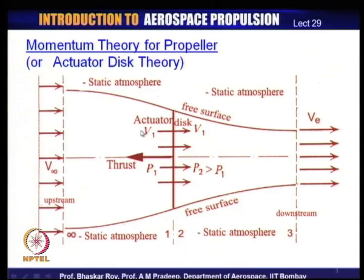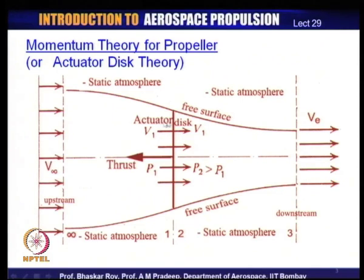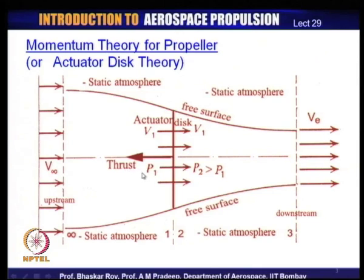As the flow moves into the actuator disc, it acquires a velocity V₁ — the velocity at the actuator disc — changed from V∞ which is the far upstream velocity. The actual velocity through the actuator disc is V₁. Across the actuator disc there is a change of pressure: it changes from P₁ to P₂ in a jump change. P₂ must be greater than P₁, and this differential pressure on the two sides of the actuator disc actually creates the thrust.